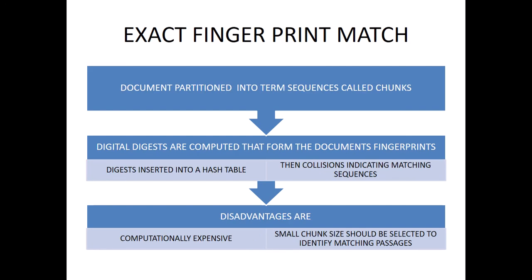In the fingerprint match technique, the document is partitioned into sequences called chunks. Digital digesters are computerized and form document fingerprints as small patches. These digests are inserted into hash tables for exact matching of sequences. The system tries to identify patterns that are being repeated, then takes those patterns as fingerprints and matches them.